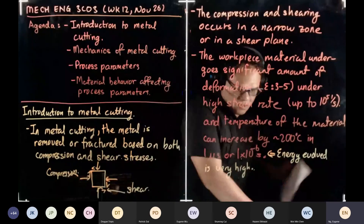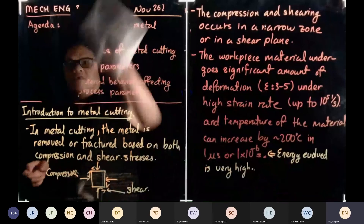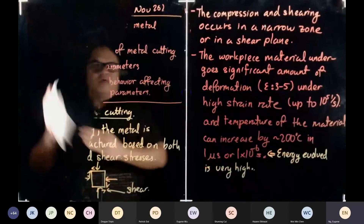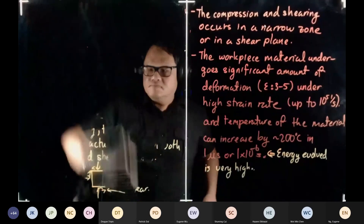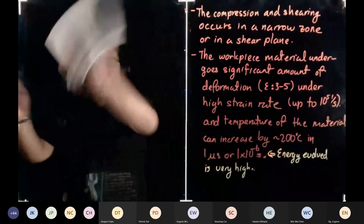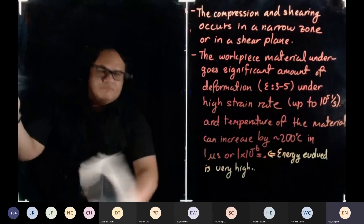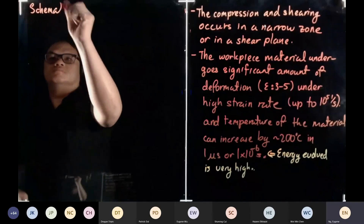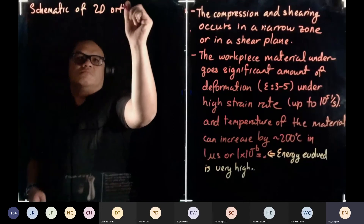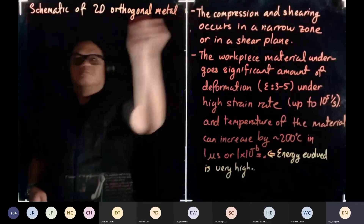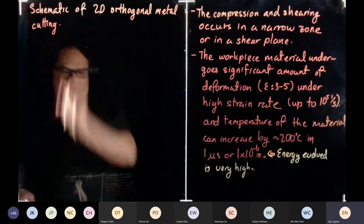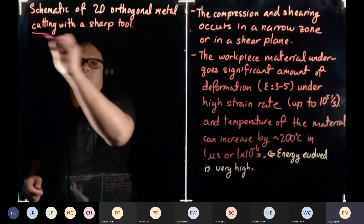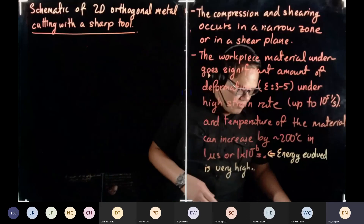We're going to draw the schematics of metal cutting. There are terms that you have to know, so draw big — we're going to label a lot of stuff. We are going into the schematics of 2D orthogonal metal cutting with a sharp tool.